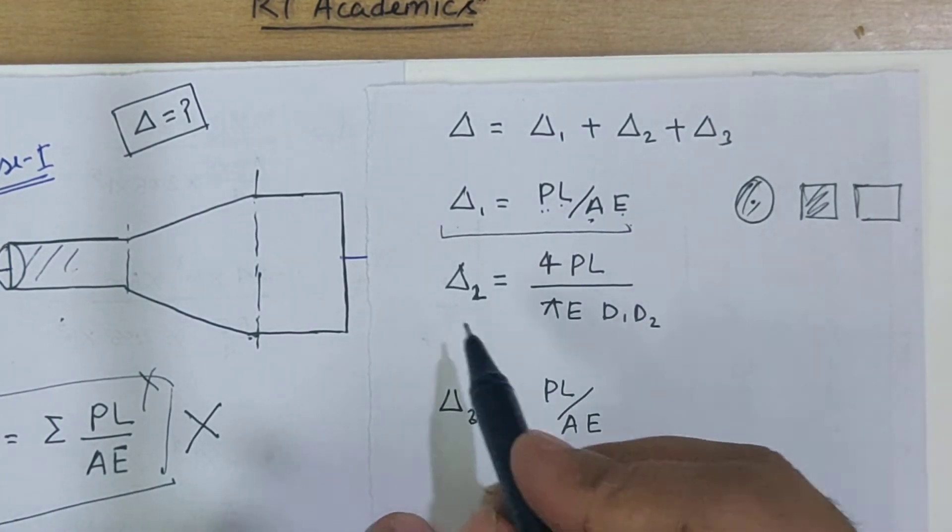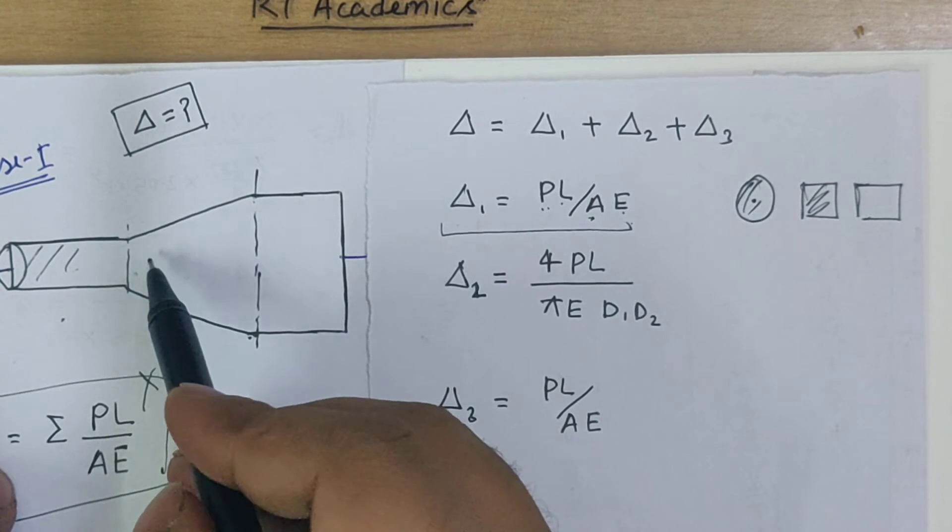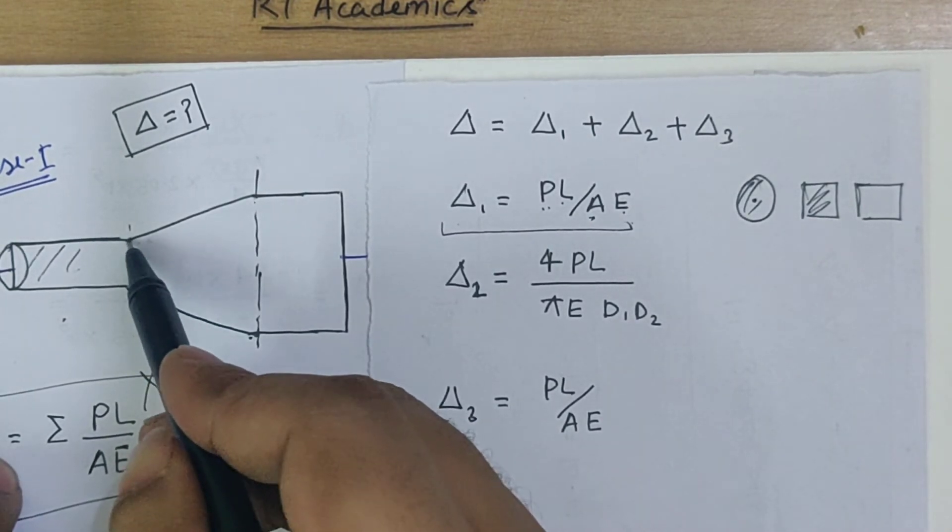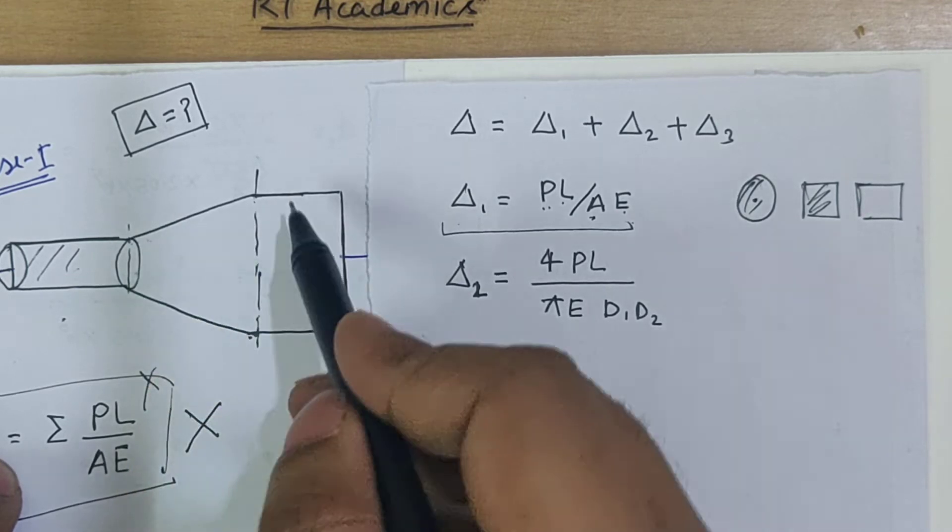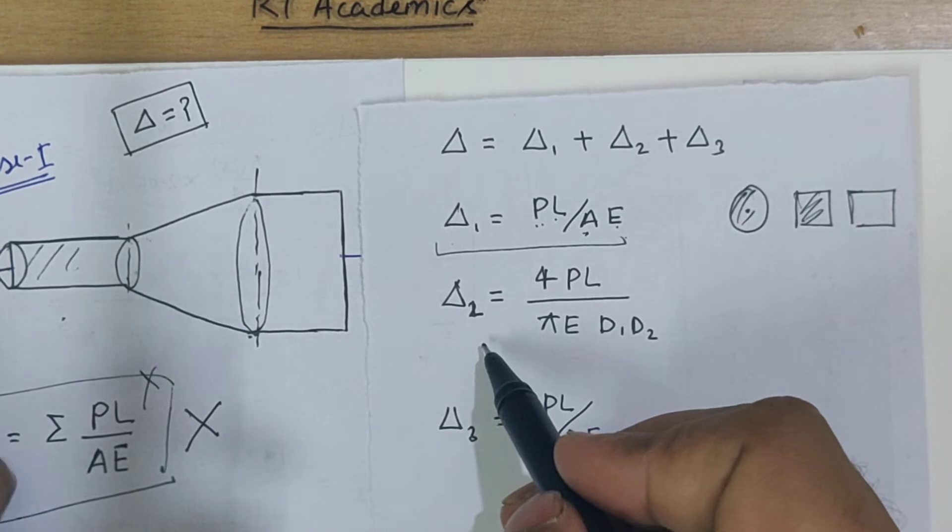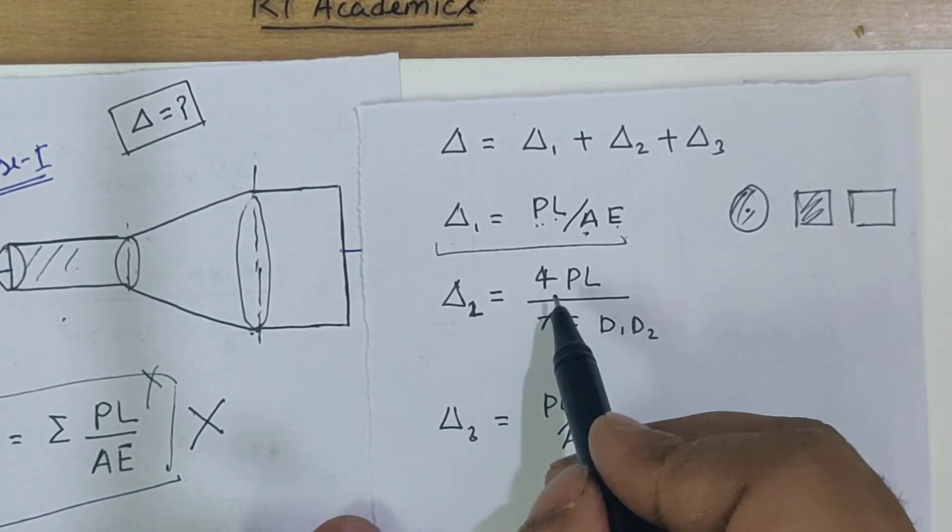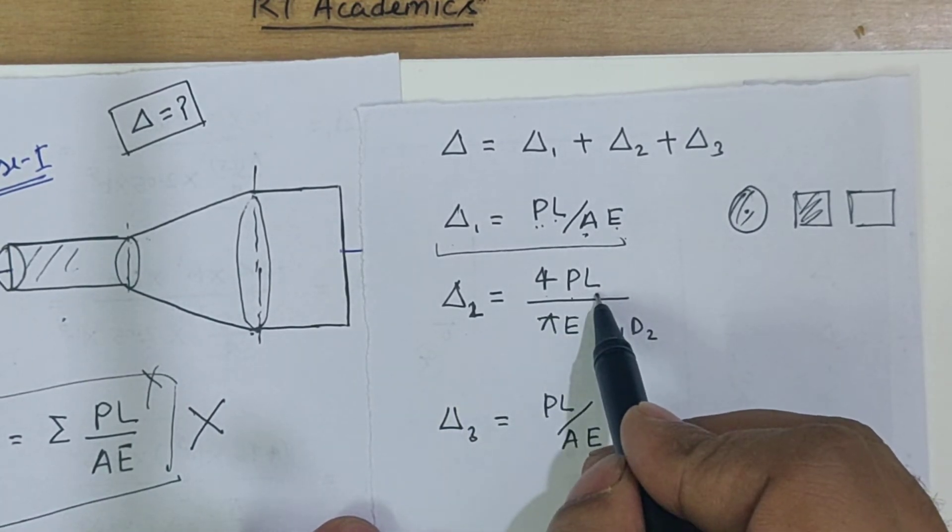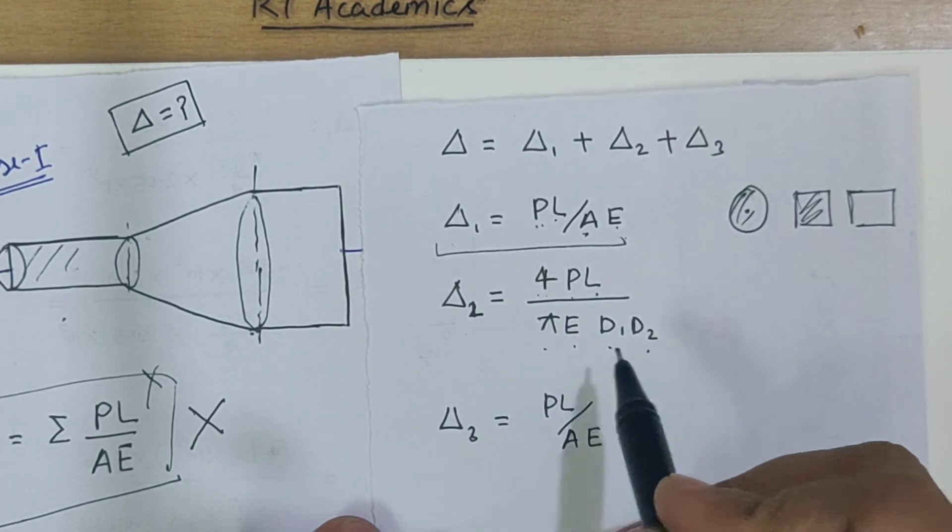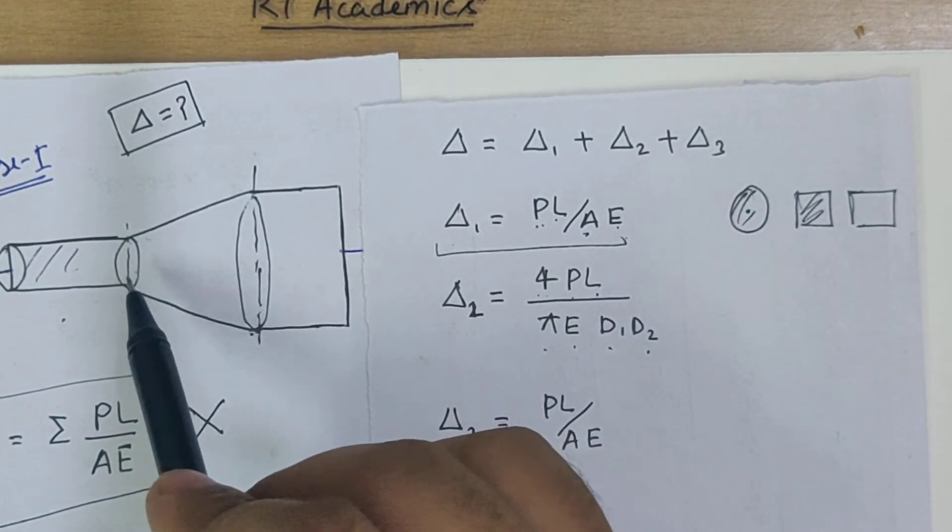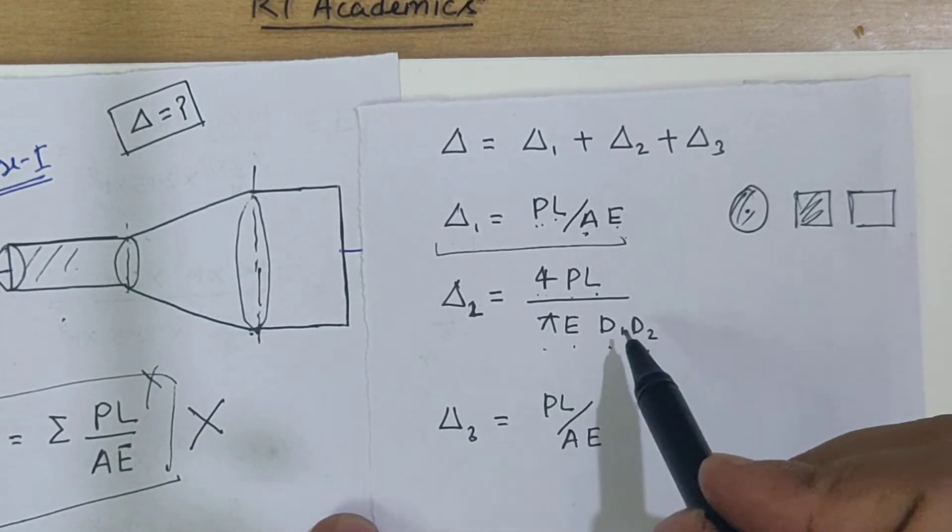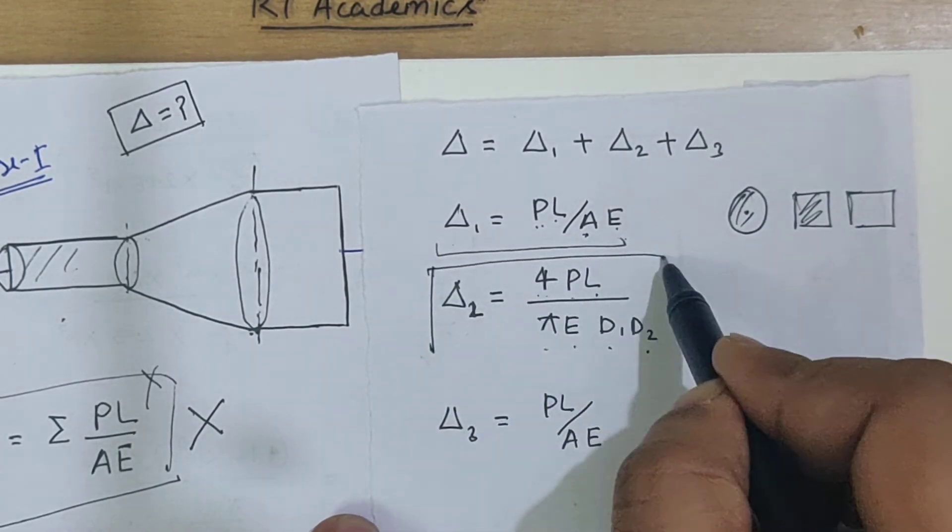If you see the second picture, deformation in the second segment can be seen. If this is a circular section or tapered circular section of diameter d₁ and d₂, then the deformation can be calculated: Δ₂ = 4PL/(πE·d₁·d₂), where d₁ and d₂ are the diameters at initial and end locations respectively. This is the standard relation you have to keep in mind.